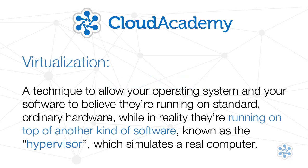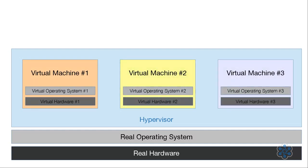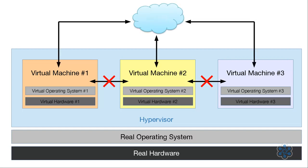Briefly, virtualization is a technique to allow your operating system and your software to believe they're running on standard, ordinary hardware, while in reality they're running on top of another kind of software known as the hypervisor, which simulates a real computer. You create a hypervisor on your server and then create a number of so-called virtual machines inside of it. Each virtual machine can be seen as a completely new and independent server in a completely insulated environment, without any possibility of contamination among the virtual machines, but provisioned with virtual network interfaces to communicate with each other and the internet.